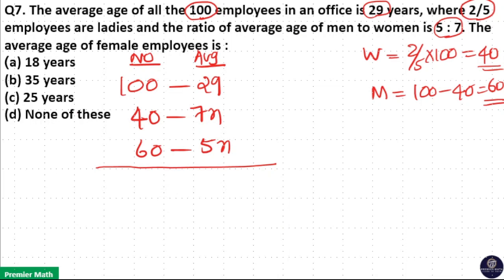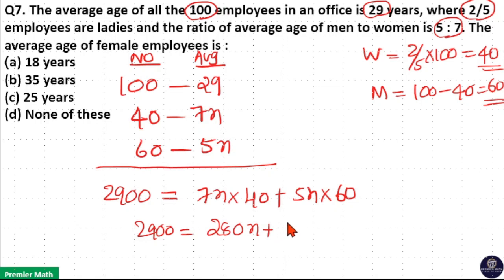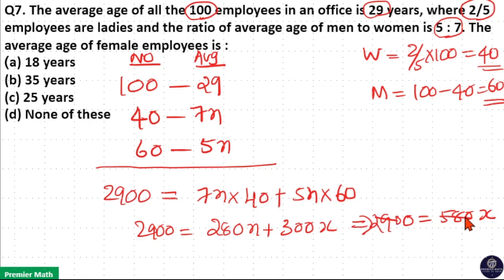Even if you do it the normal way: 29 × 100 equals total age of women plus total age of men, that is 7x × 40 plus 5x × 60. So 2900 equals 280x plus 300x, which equals 580x. Since 290 goes 2 times in 580 and 2 goes 5 times in 10, x equals 5 — same answer. That is why you can simplify the numbers but should not cancel the averages.